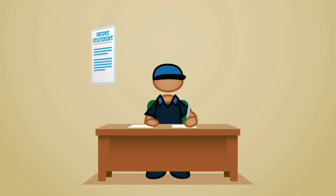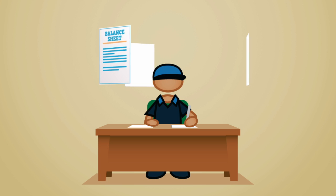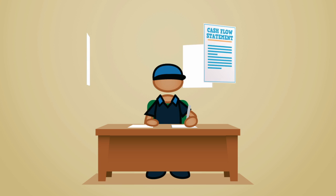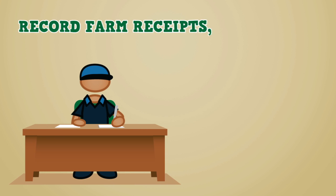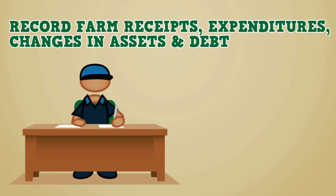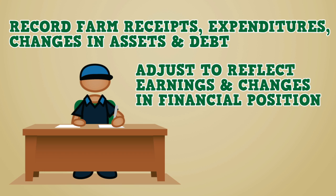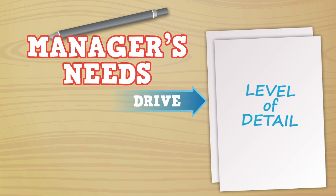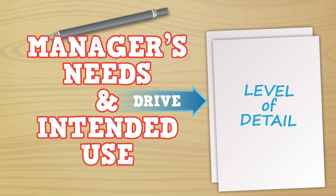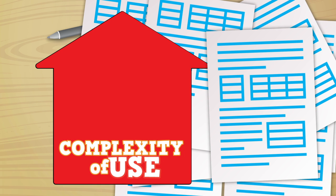Understanding these three statements gives the manager the ability to conduct formal financial analysis to determine the use of all farm assets and inputs over one fiscal year. To do this, the farm manager must record farm receipts, expenditures, and changes in assets and debt, adjusting to reflect earnings and any change in financial position for the fiscal period. The level of detail in records required for financial analysis is driven by the manager's needs and the intended use for the reports. As the complexity of use goes up, the detail needed for record keeping increases incrementally.